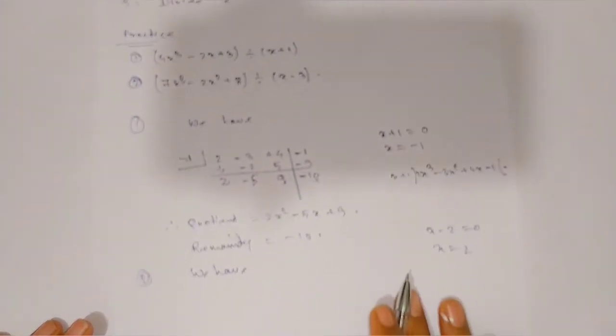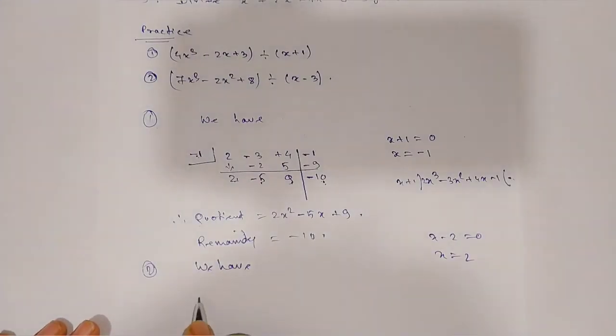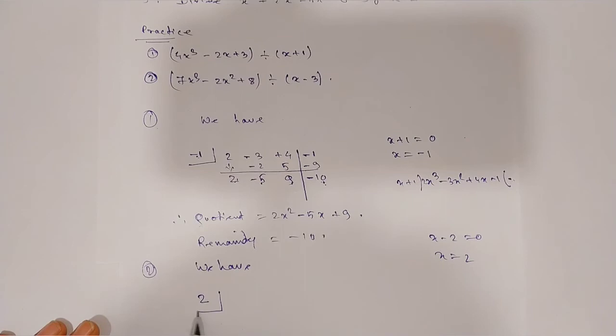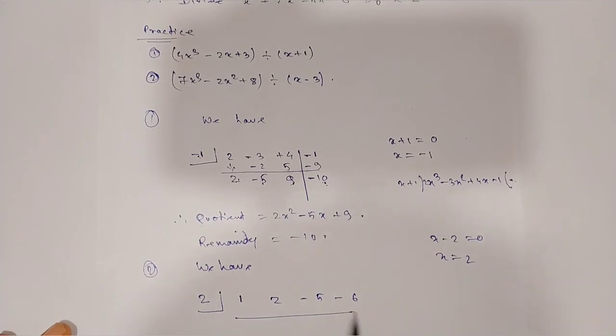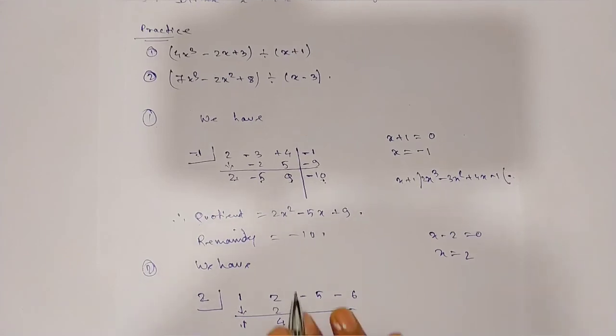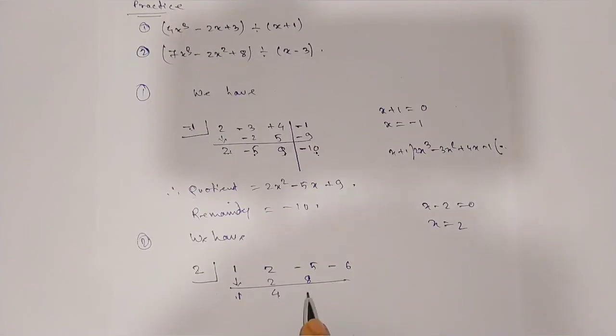Write 2, then the coefficients 1, 2, minus 5, minus 6. Multiply 2 by 1 to get 2. Add 2 and 2 to get 4. Multiply 4 by 2 to get 8. Add minus 5 and 8 to get 3. Multiply 3 by 2 to get 6. Add minus 6 and 6 to get 0.